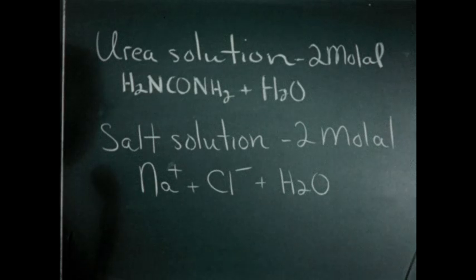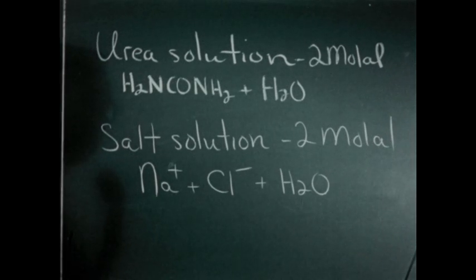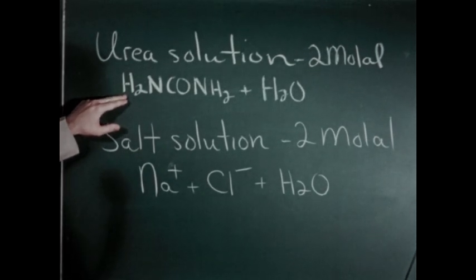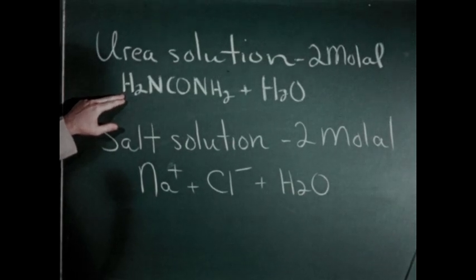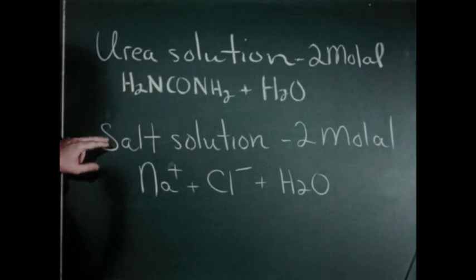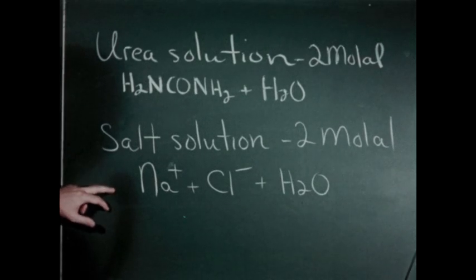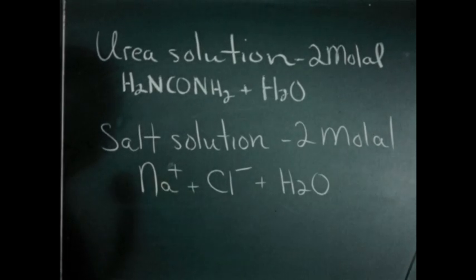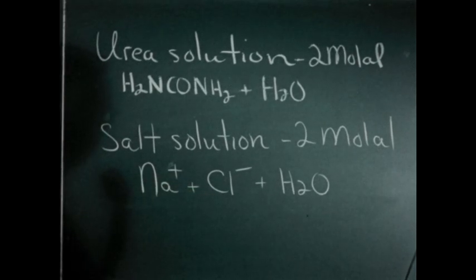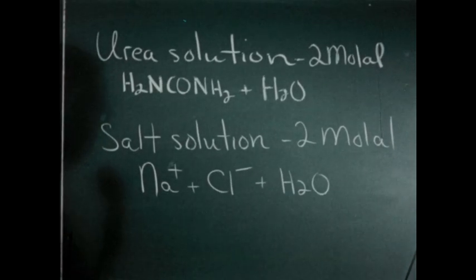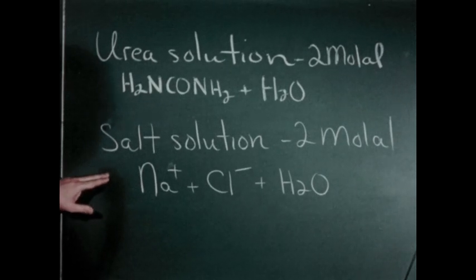We've taken two formula weights of urea and two formula weights of sodium chloride and added them to, in each case, 1,000 grams of water. The urea solution had a higher boiling point than pure water because a certain number of urea particles were present. In the case of sodium chloride, the boiling point was raised even higher because the formula weight of sodium chloride in solution dissociates into a sodium ion and a chloride ion, giving approximately twice as many particles as in the urea solution. This additional number of particles caused the higher elevation of the boiling point.